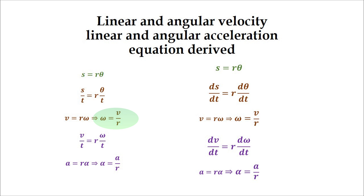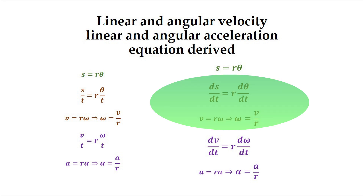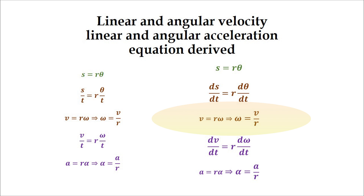Similarly, in the differential form, you can take the derivative of this equation with respect to time, ds by dt. This will become linear velocity v is equal to r times angular velocity. Further solving, we will get angular velocity omega is equal to linear velocity divided by r.